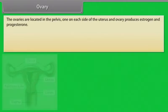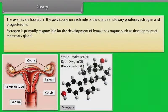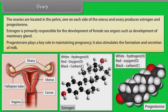The ovaries are located in the pelvis, one on each side of the uterus. The ovary produces estrogen and progesterone. Estrogen is primarily responsible for the development of female sex organs, including development of mammary glands. Progesterone plays a key role in maintaining pregnancy and also stimulates the formation and secretion of milk.